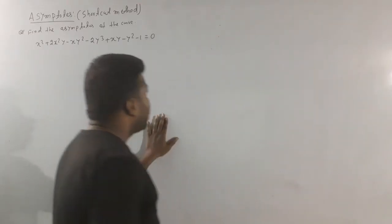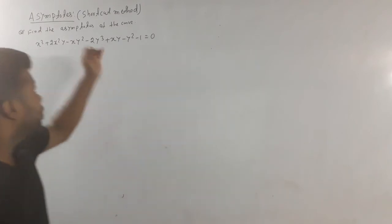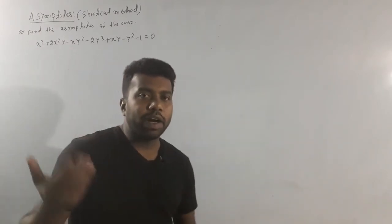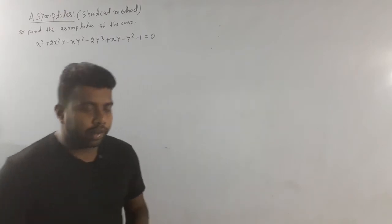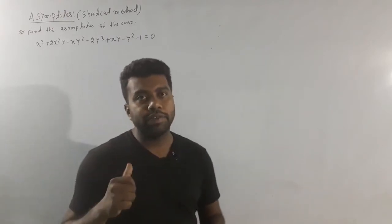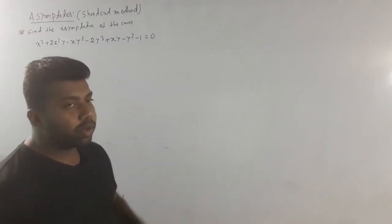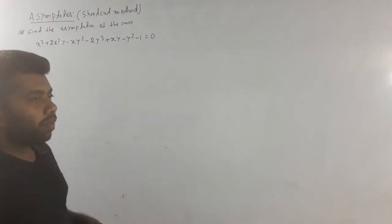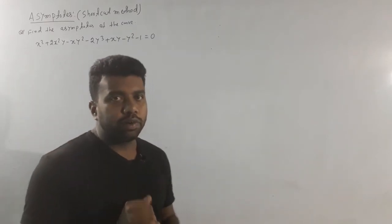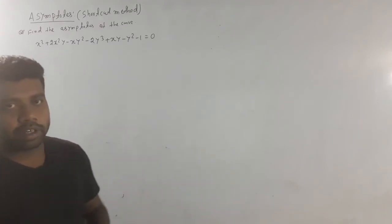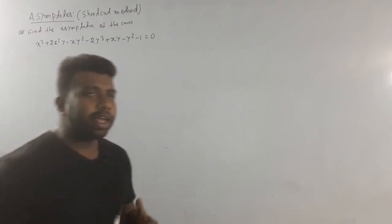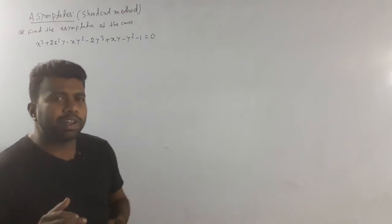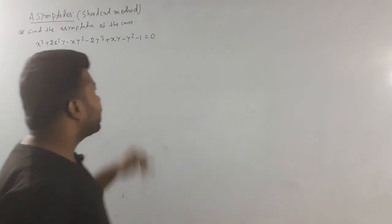I have not done the asymptote and shortcode method yet. I am done with part 1, which you have seen in this video. Now that you have done the general method, you will find the shortcode method easier to use. We are going to start with the shortcode method. If you have a question for the exam, try to do the shortcode method, because the general method is very lengthy.